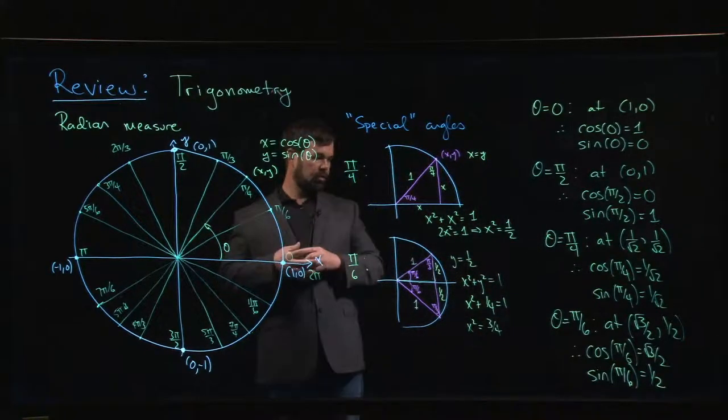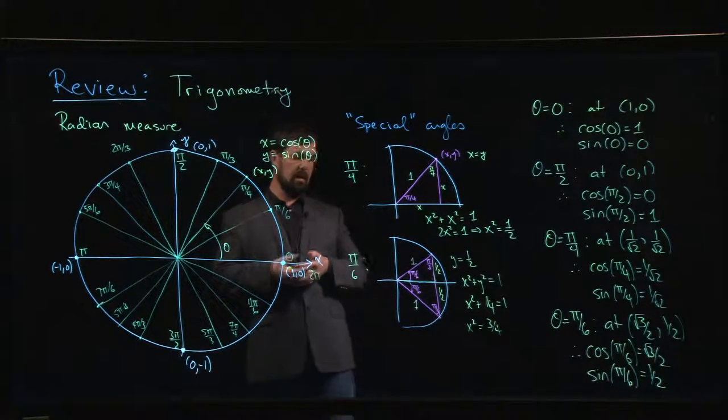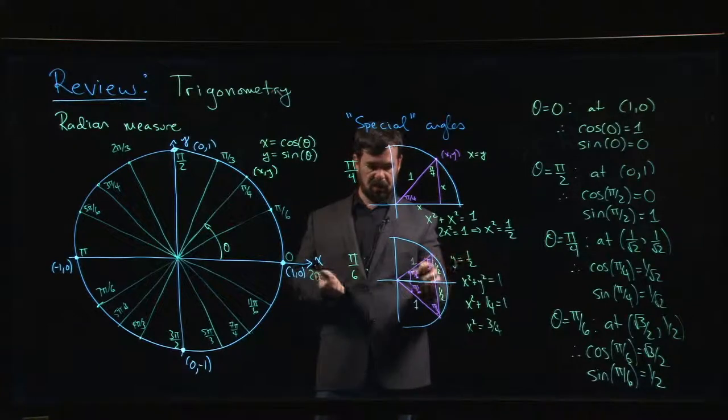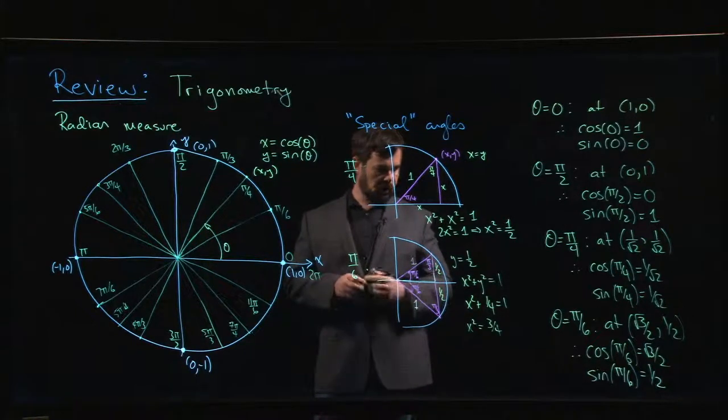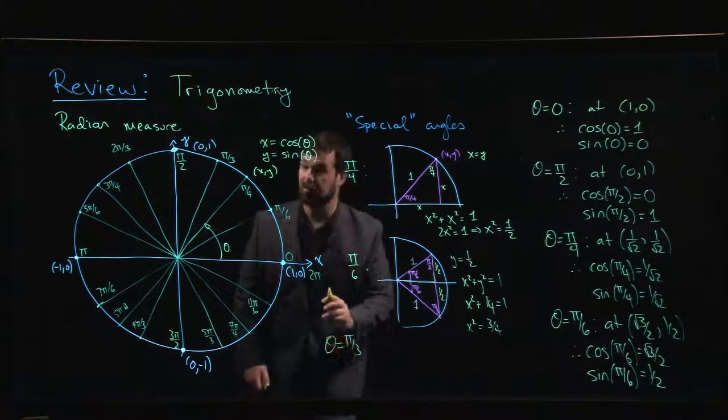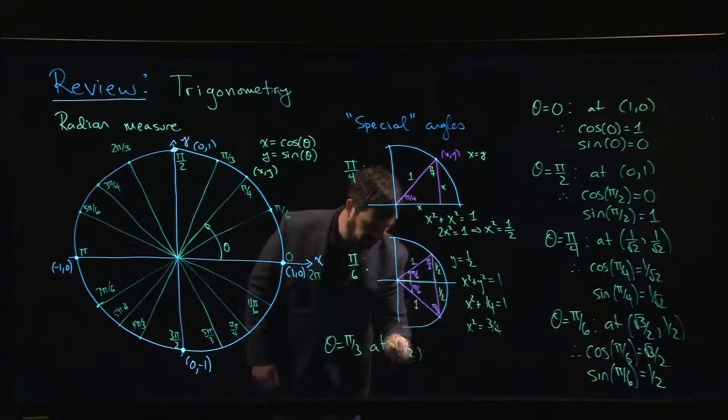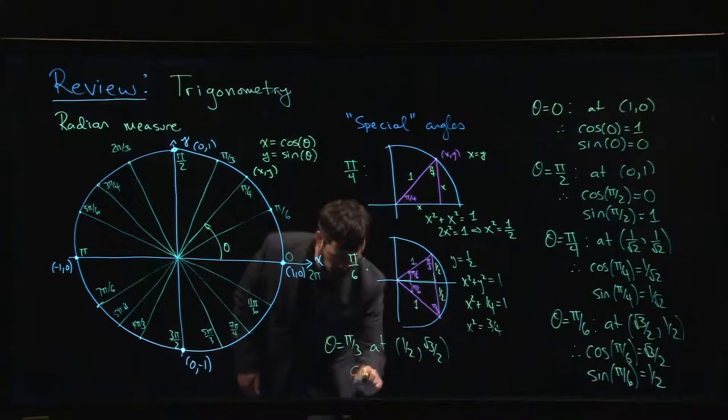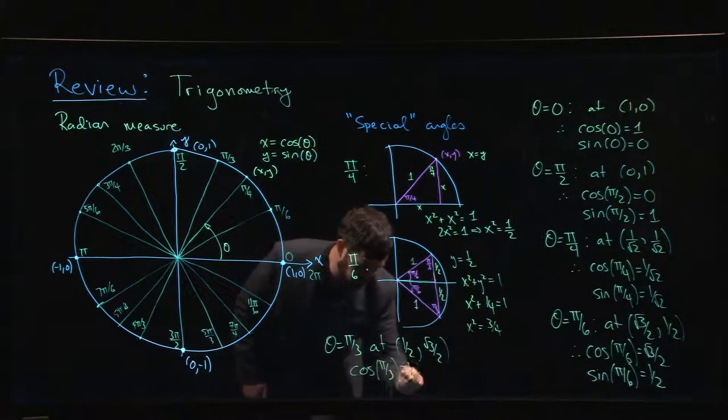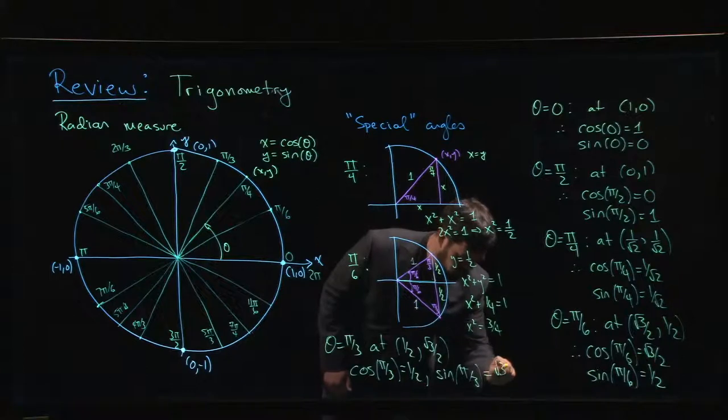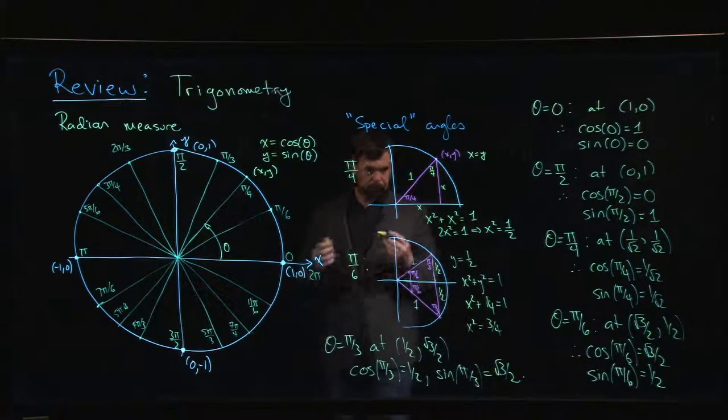All right, so that's not so bad. The only one that's left over is pi over 3. But you can kind of use some symmetry here that if you can exchange roles. Or you can go back to your right triangle trig. For this angle, opposite and adjacent kind of switch roles. So sine and cosine switch roles. And so you can work out that the last angle to deal with in the first quadrant, pi over 3, that's when x is 1 half and y is equal to root 3 over 2. And so that means that cos pi over 3 is a half. Sine of pi over 3 is root 3 over 2.